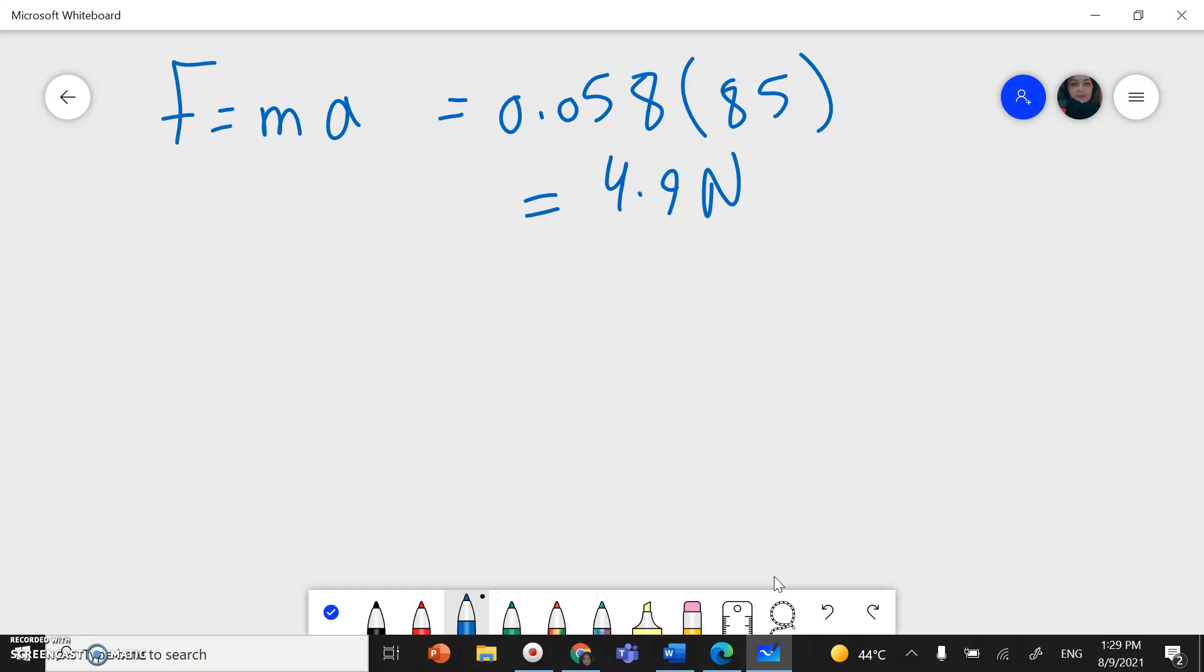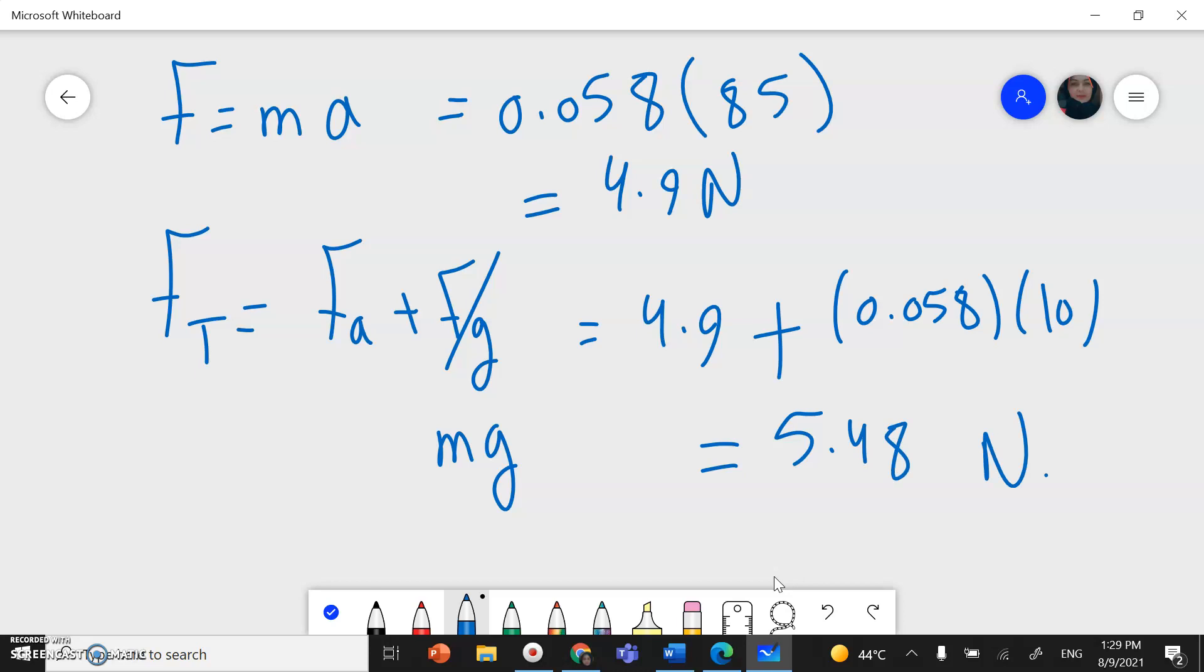We said I have two forces. So resultant force or total force, I have acceleration force plus the weight of this egg. So acceleration force is 4.9 plus the weight, which is mass times gravity, 0.058 times 10. This gives you around 5.48 Newtons, or 5.5 Newtons. This is the first method.